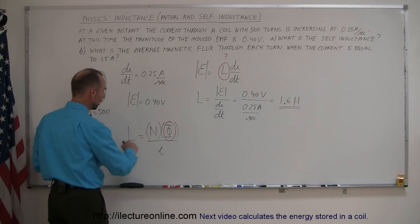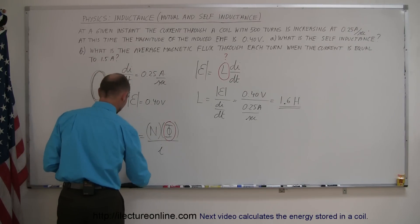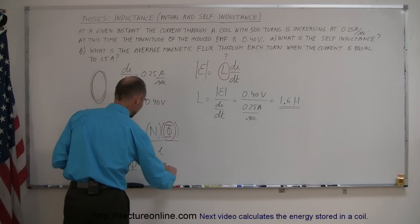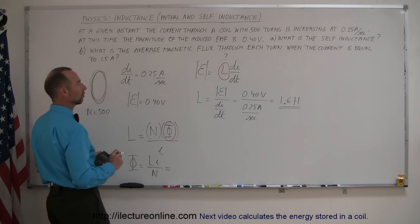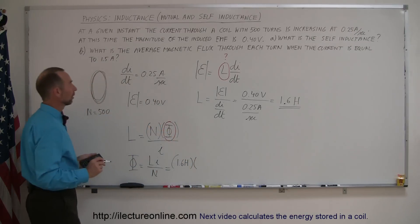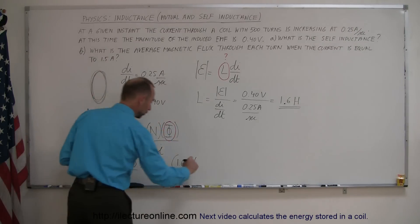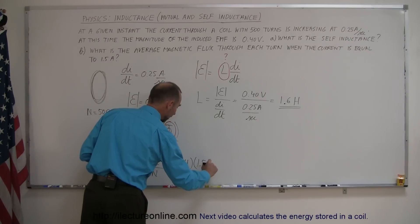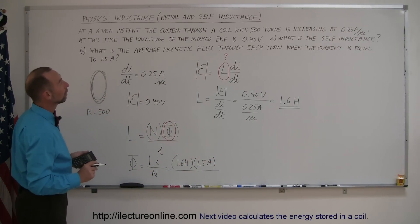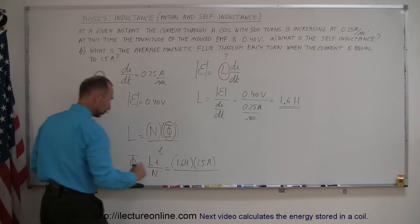So, multiply both sides by the current, divide both sides by N. So, we have the flux through the coil is equal to the self-inductance times the current divided by the number of loops. And so, the self-inductance, we found to be 1.6 Henrys. Then we multiply times the current. The current at that moment is 1.5 amps. And then we divide the whole thing by the number of loops, the number of turns, which is 500.